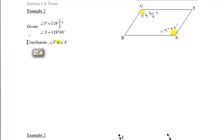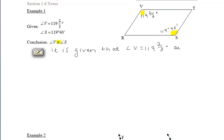Some of you may be thinking this is very obvious, but in a proof we want to make sure that we include all of the steps even if it seems unnecessary or obvious. So let's start off our paragraph proof by stating our given information: the measure of angle V is 119 and 2/3 degrees, and the measure of angle S is 119 degrees and 40 minutes. Let's use our knowledge about converting degrees to minutes and minutes to degrees.